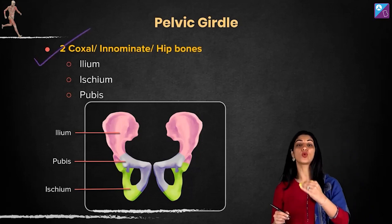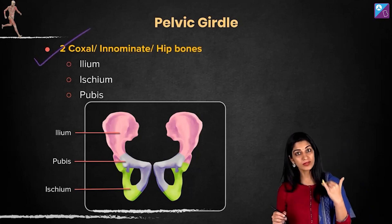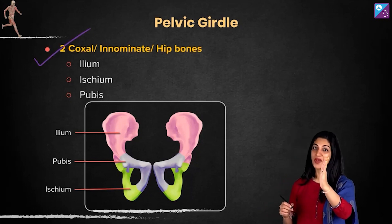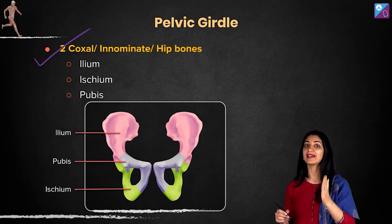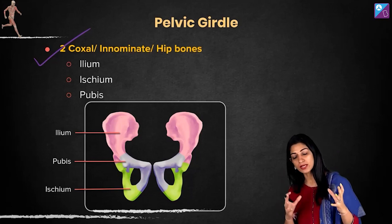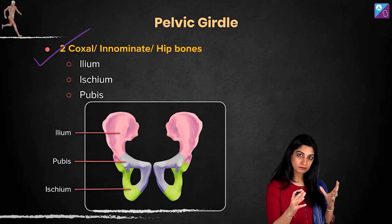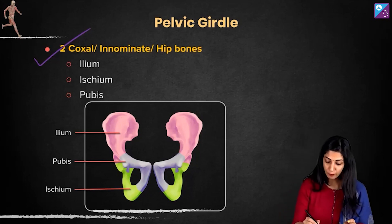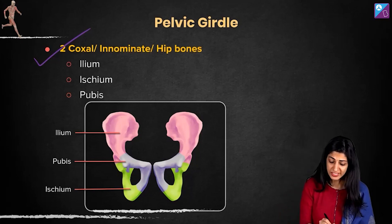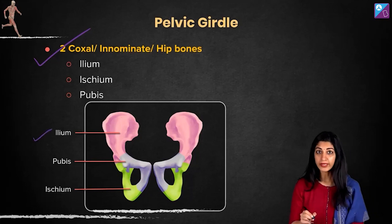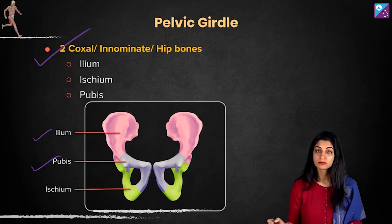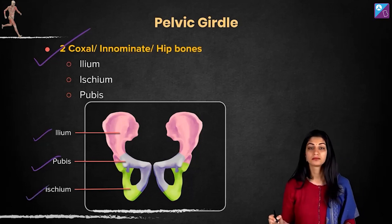These hip bones are called the two coxal bones. We follow the same guideline — we are going to listen, move with you, and write with you. Now, each hip bone consists of three parts: the broad part called the ileum, the pubis, and the ischium.